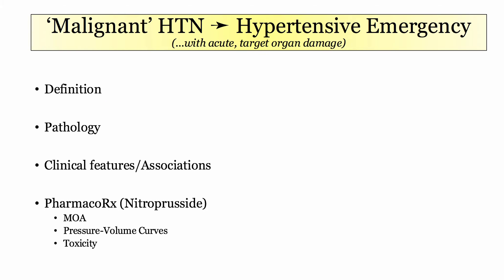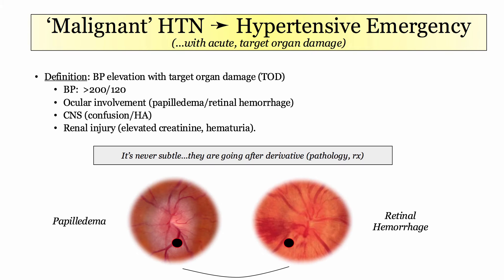In terms of nomenclature, the term malignant hypertension is used primarily in discussions of pathology, whereas clinically, these patients will be described as having hypertensive emergencies. With that definition of a hypertensive emergency, let's get started.